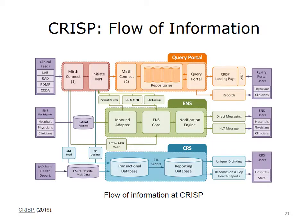CRISP provides various services to its stakeholders. There are three main delivery mechanisms for all of these services: a query portal, where clinicians can request and retrieve patient information collected elsewhere; an encounter notification system, or ENS, that will send a notification or message to a clinician for a given patient if certain conditions become true; and CRISP's reporting system, or CRS, which provides monthly reports to its stakeholders. Note that all three mechanisms are currently or will soon embed population health risk scores. These scores include both scores for individual patients and scores for large subgroups of populations, depending on their use case.